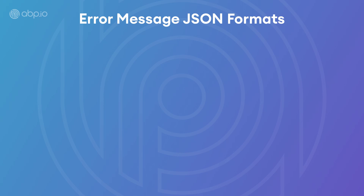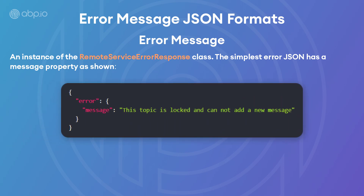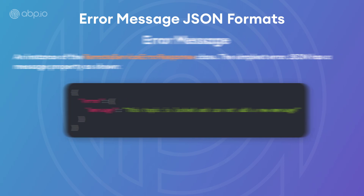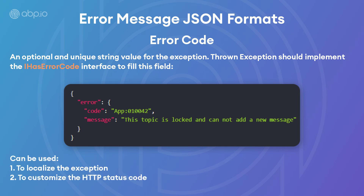Let's take a look at the JSON formats of the exceptions. The error message is an instance of the RemoteServiceErrorResponse class. It is the simplest error JSON that has a message property, and it can be used when you just need to pop up an error message without other fields like error codes or error details. The other optional fields can be filled based upon the exception that has occurred — such as the error code, which is an optional unique string value for the exception. The thrown exception should implement the IHasErrorCode interface to fill this field, and it can also be used to localize the exception and customize the HTTP status code.